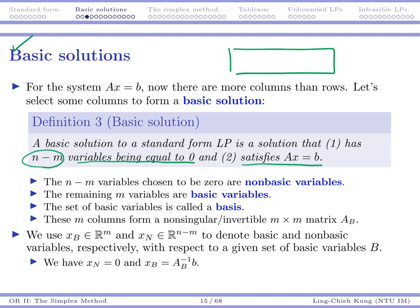So the n minus m variables are set to be 0, we call them non-basic variables. The remaining m variables are called basic variables. The set of basic variables form a basis for your linear program.